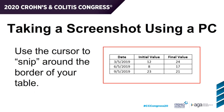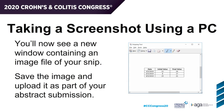The cursor will now turn into a crosshair mark, which you can use to outline your table. When you release the mouse key, the image you just took will open in a new window. Save that image and then upload it to your abstract submission.